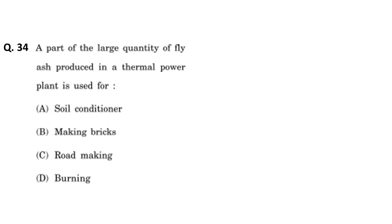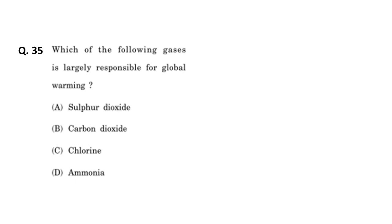The thirty-fourth question: a large quantity of fly ash produced in thermal power plants is used for — options are A) soil conditioner, B) making bricks, C) road making, D) burning. Fly ash has been used as a soil conditioner and for road making, but the major part is used for making bricks. So the correct answer is making bricks.